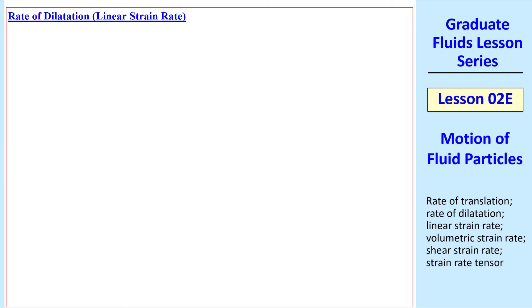Now consider the rate of dilatation, or linear strain rate. The word dilate means to become larger. For example, the pupils in your eyes dilate, meaning they get bigger. Dilatation means the fractional increase in length, or linear strain. To illustrate, we'll consider a tiny line segment AB.